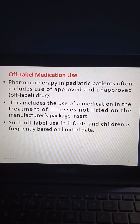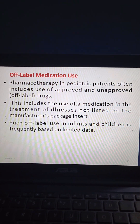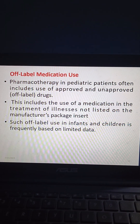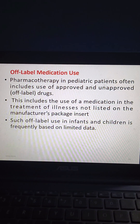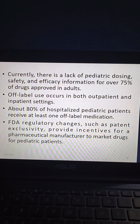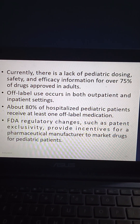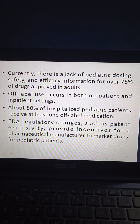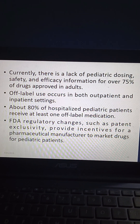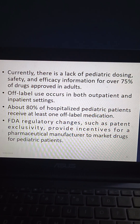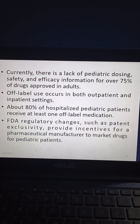Regarding off-label medication use, pharmacotherapy in pediatric patients often includes use of approved and unapproved (off-label) drugs. This includes use of a medication for treatment of an illness not listed on the manufacturer's package insert, and such off-label use in infants and children is frequently based on limited data. There is a lack of pediatric dosing, safety, and efficacy information for over 75% of drugs approved in adults. About 80% of hospitalized pediatric patients receive at least one off-label medication. FDA regulatory changes such as patent exclusivity provide incentives for pharmaceutical manufacturers to market drugs for pediatric patients.